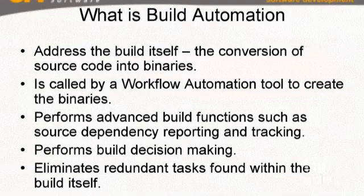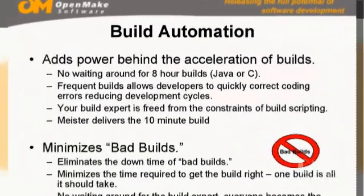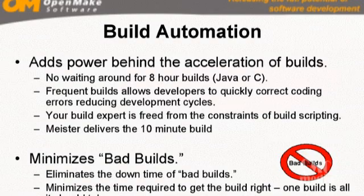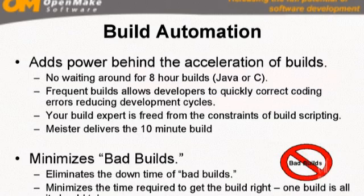Also, the build automation will go ahead and remove redundant tasks that occur throughout the build process. One of the things that build automation does is it adds the power to accelerate the build process — that is the compiling of the code from the source into the binaries. There's no longer the need to have an eight-hour build. We're able to create frequent builds that are occurring correctly and removing those redundant cycles through the build process.